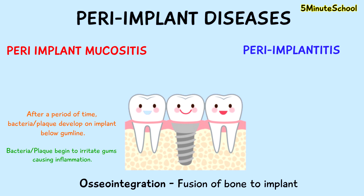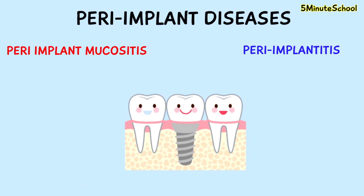After a period of time, the bacteria begin to irritate the gum causing inflammation. And if this isn't recognized and treated early, it can cause the bone around the implant to break down, resulting in loosening of the implant. Peri-implant diseases can be divided into two categories: peri-implant mucositis and peri-implantitis.